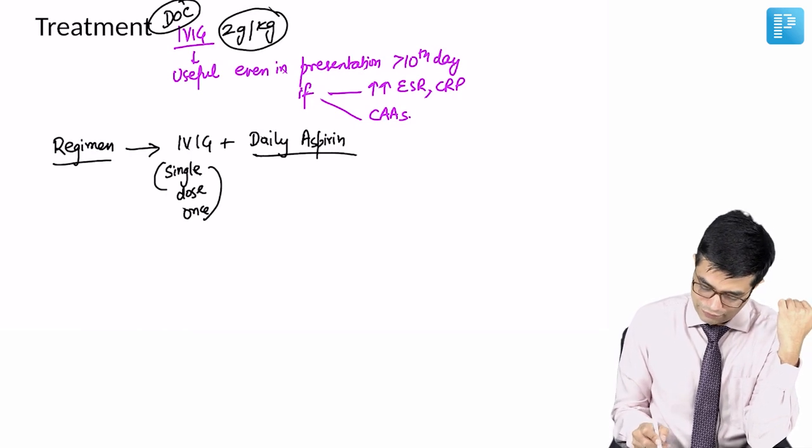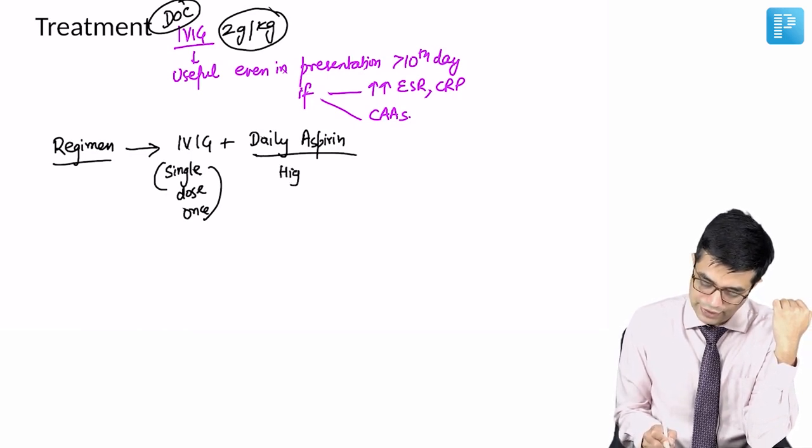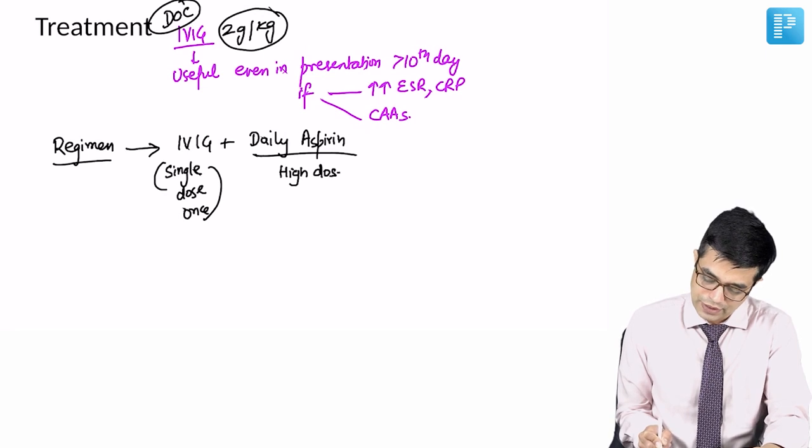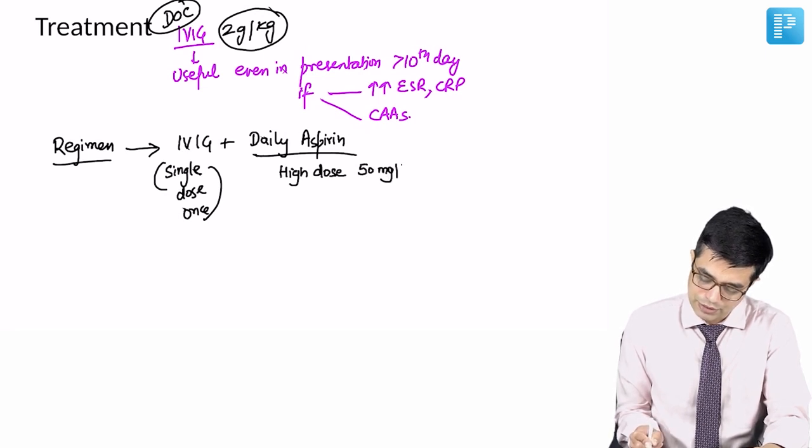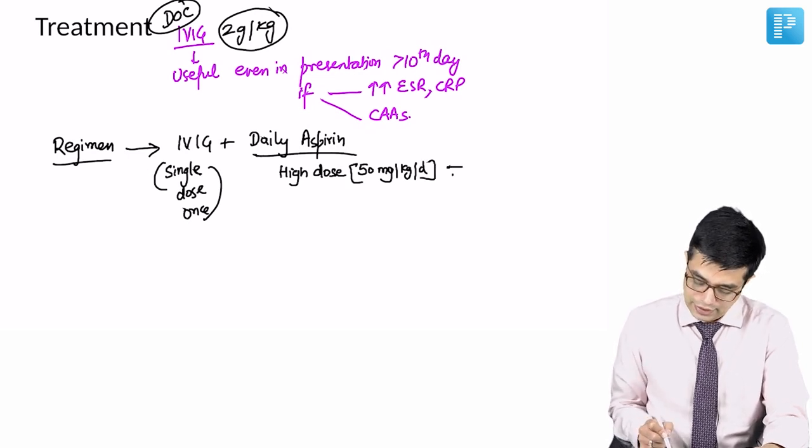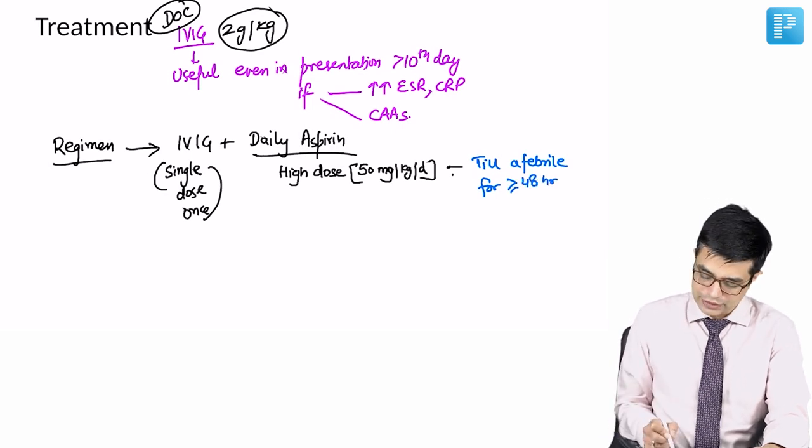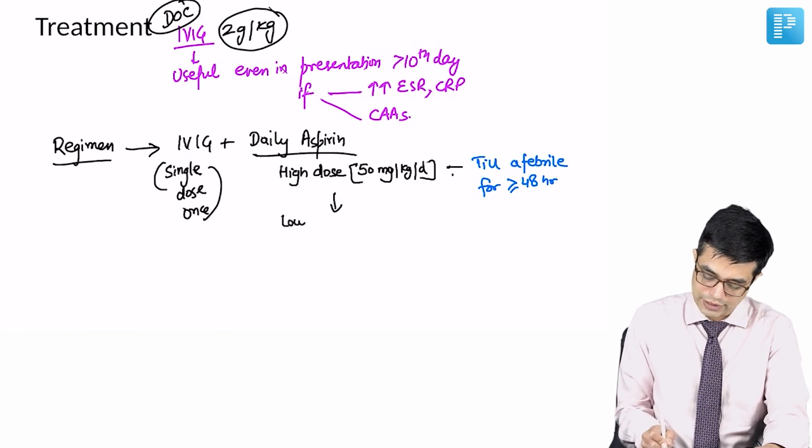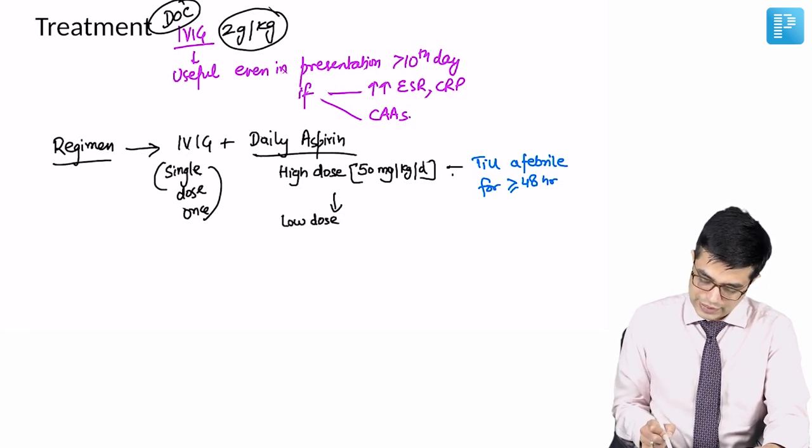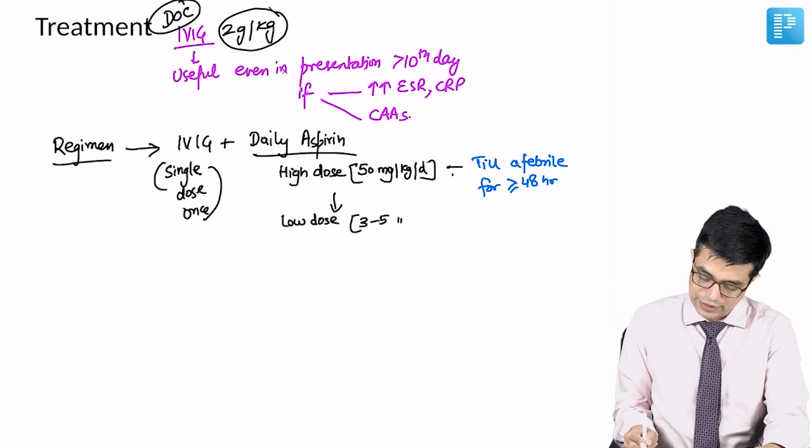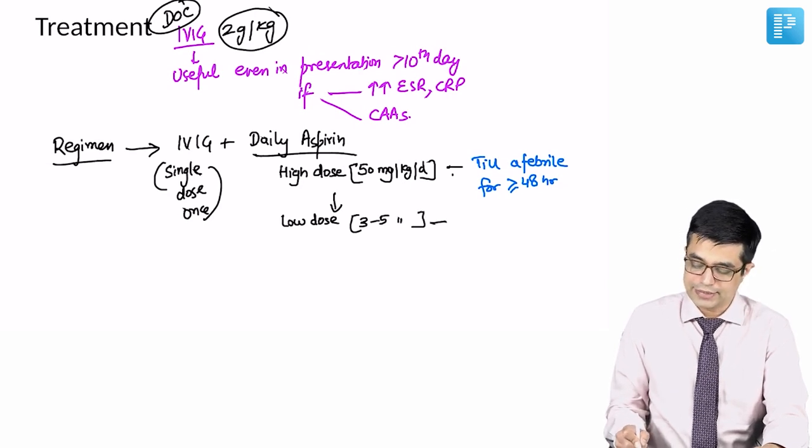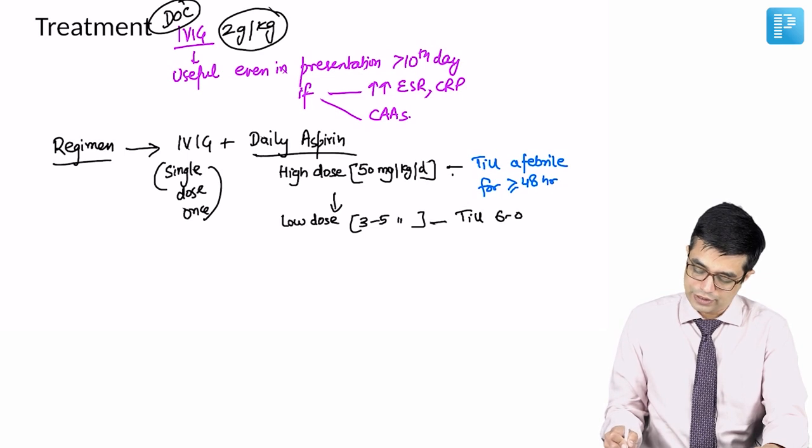So, you can remember that first, initially we start with high dose aspirin in the patient. High dose aspirin is approximately 50 milligram per kg body weight per day in 3 to 4 dividing doses. It is given till the patient is afebrile for more than equal to or more than 48 hours. After that, you switch the high dose to low dose aspirin. Low dose aspirin will be 3 to 5 milligram per kg body weight per day and it is given till 6 to 8 weeks.